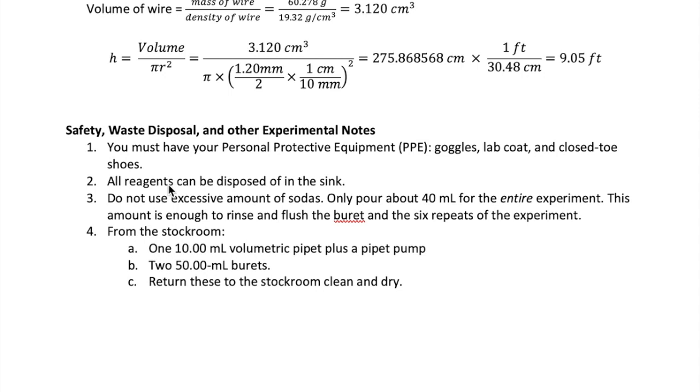For this specific experiment, the soda you use can be disposed of in the sink. Keep in mind that you don't want to use too much, or waste the soda. You really only need about 40 milliliters to flush your burette and make all the six measurements. The other thing you need to do is check out the following equipment from the stock room: a volumetric pipette and a pump, as well as two burettes. These glasswares must be cleaned, dried, and returned to the stock room when you're done with the experiment.